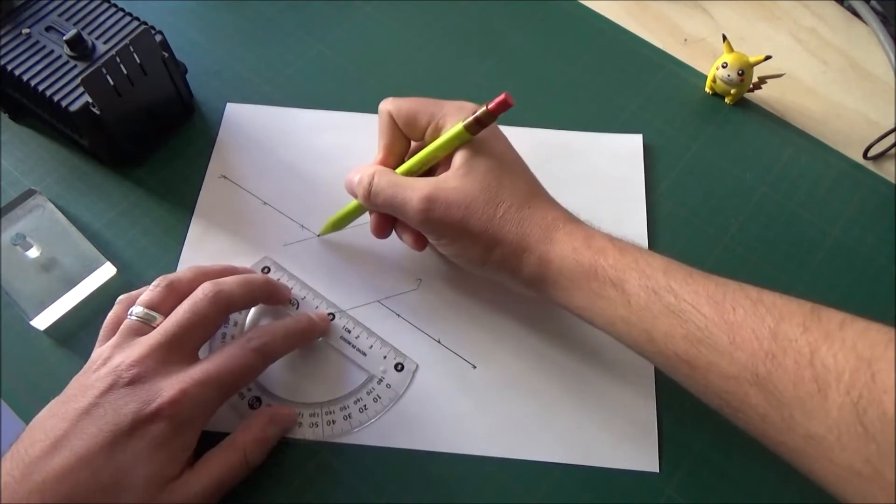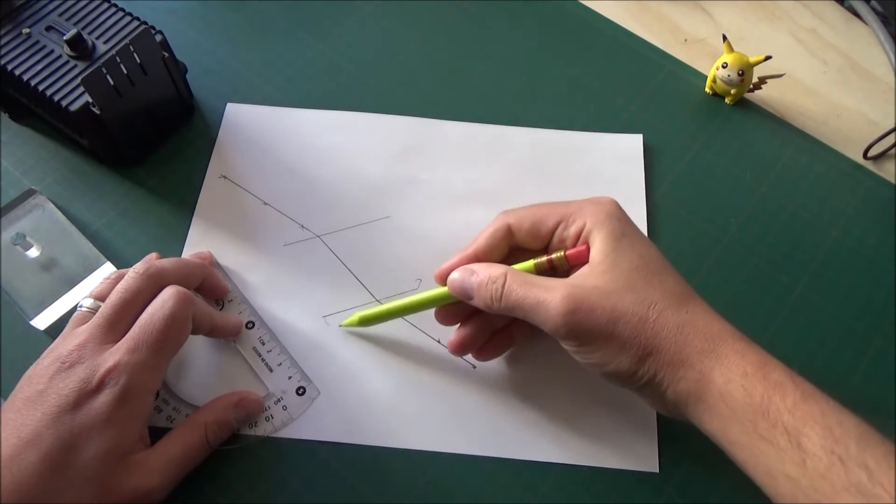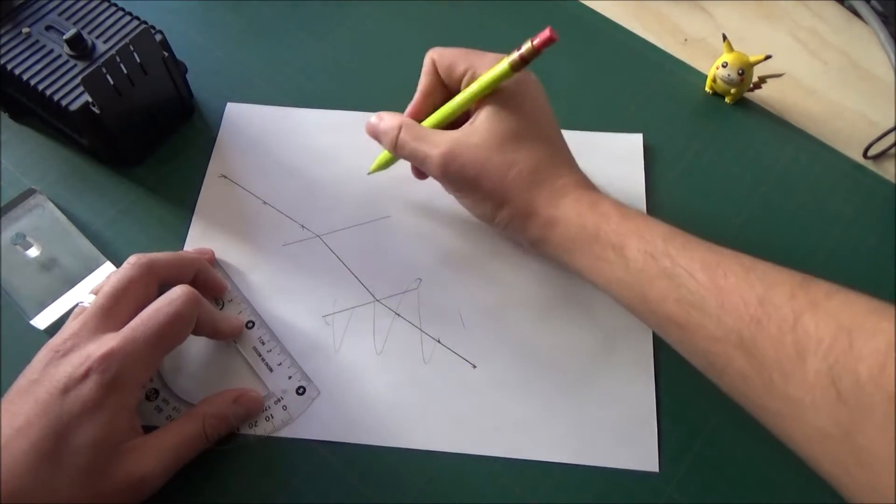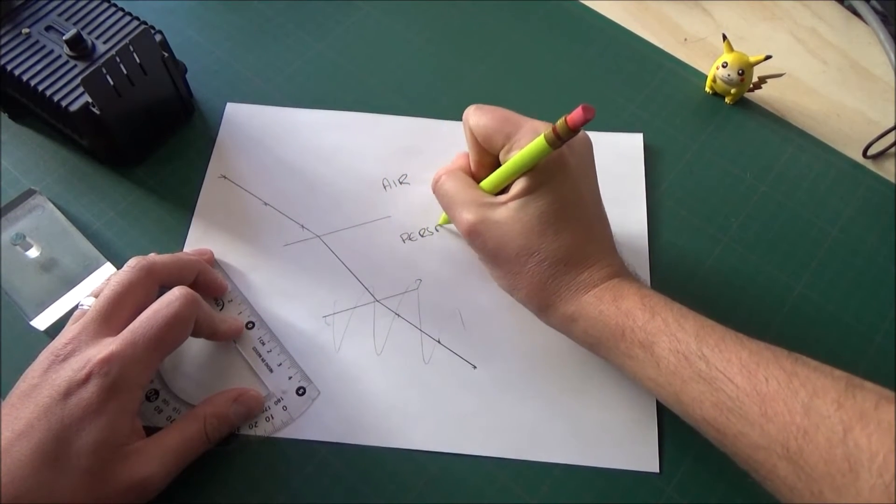And now what I can do is, between those two points, I can join those two points together, and I've got the path of the ray inside of the perspex. Now, we're not too bothered about the ray at the bottom. We're only interested in the first boundary between the air and the perspex.